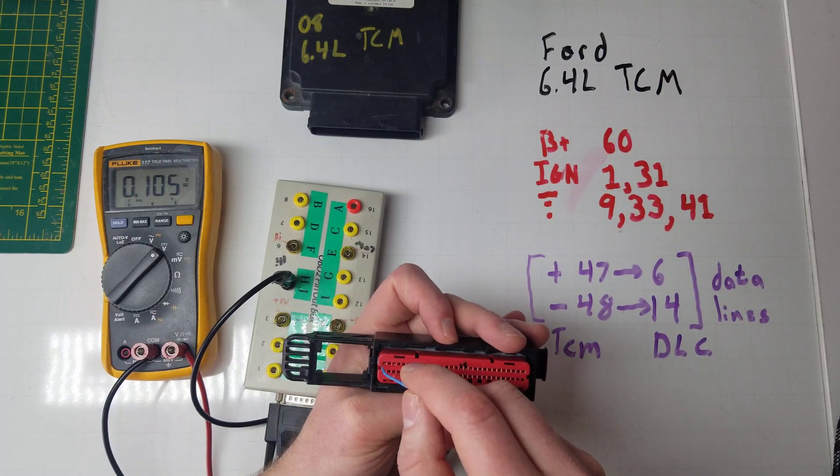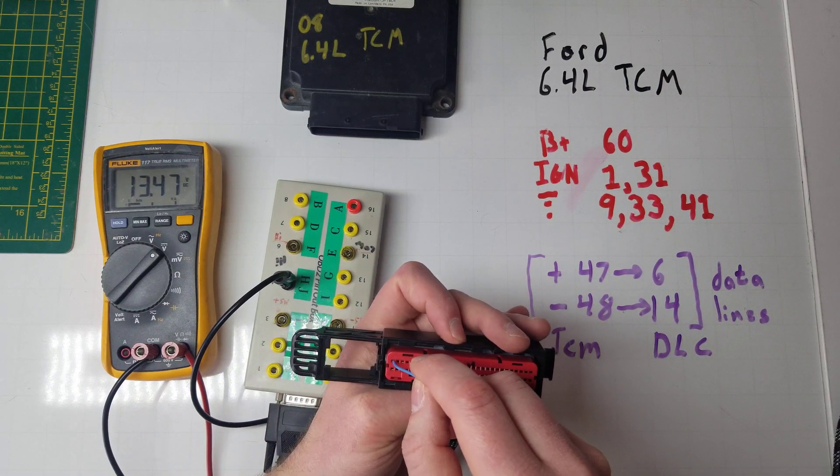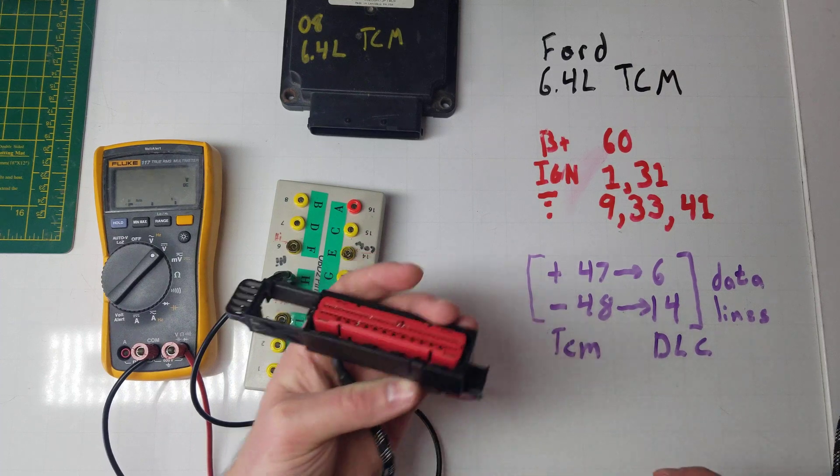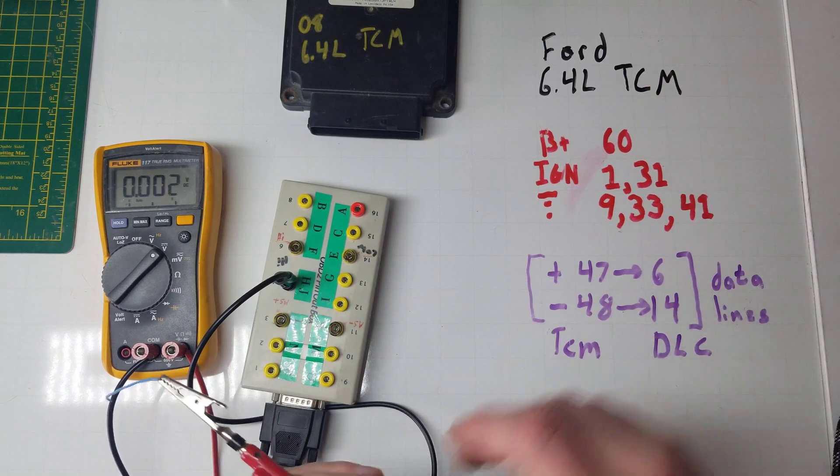Battery voltage and the two at the far end of the ignition, and those both have voltage. Next we're going to look at continuity.